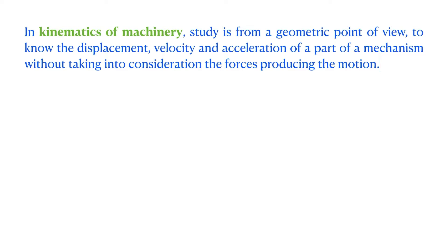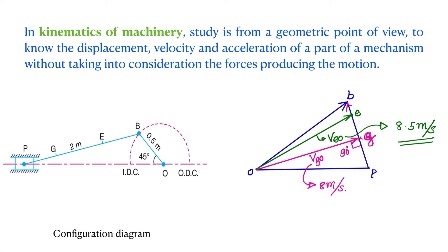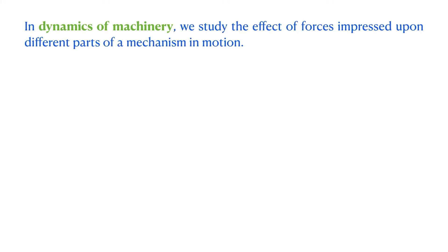In Kinematics of Machinery we were studying or analyzing the mechanism from a geometric point of view only. We consider the motions of the mechanism but we are not taking into consideration what forces are producing this motion — we are only studying the displacement, velocity, and acceleration of different parts or links of the mechanism. But in Dynamics of Machinery, in addition to velocity and acceleration analysis, we will also be calculating the different forces acting on different links of the mechanism.